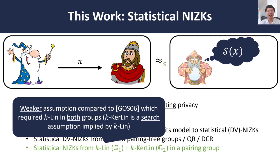Moreover, we show how to construct a statistical NIZK from a pairing-based assumption in a publicly verifiable setting. Notably, our construction can be based on a weaker assumption compared to the previous constructions of statistical NIZKs by Groth, Ostrowski, and Sahai. Our construction only requires a computational assumption in one of the base groups and a search assumption in the other, while the previous construction by Groth, Ostrowski, and Sahai relied on a computational assumption in both of the underlying groups.